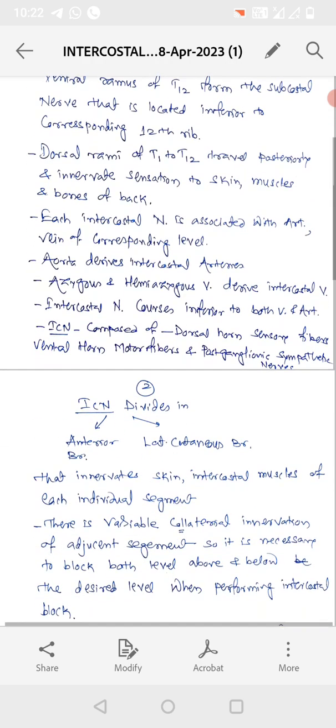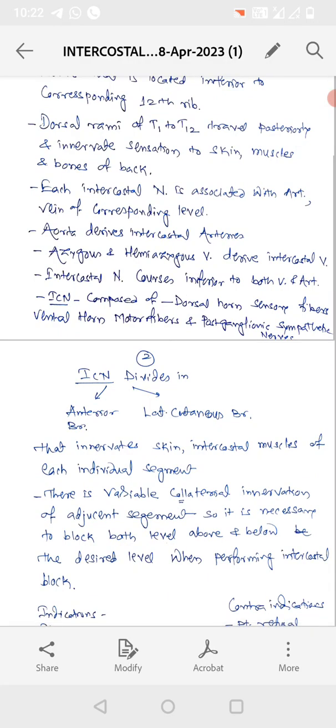Each intercostal nerve is associated with artery and vein of the corresponding level. Aorta derives intercostal arteries. Then intercostal nerve courses inferior to both vein and artery.